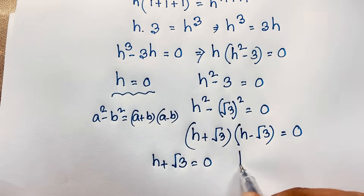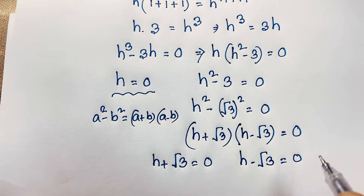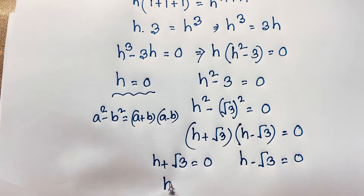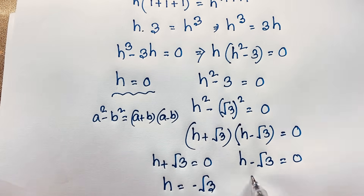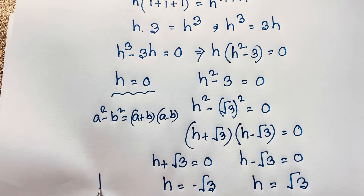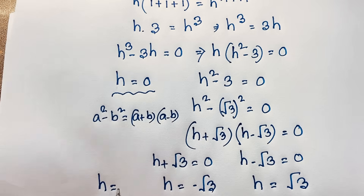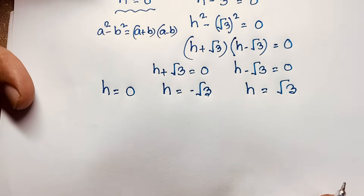Now here h equals negative √3 and h equals positive √3. Combined with our first solution h equals 0, these are our three solutions to this math problem.